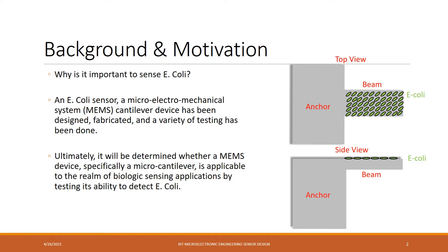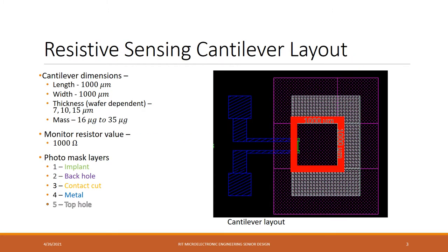The designed device is based upon a micro cantilever, which is essentially a really small diving board. The micro cantilever has gone through testing with different biomasses to determine its efficacy as a sensing unit. The micro cantilever was designed with a length of around 1,000 microns and a width of 1,000 microns. The thickness, wafer dependent, was 7 microns, 10 microns, and 15 microns, resulting in a mass between 16 micrograms and 35 micrograms.